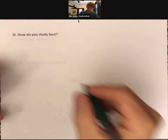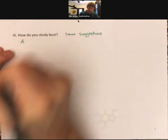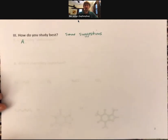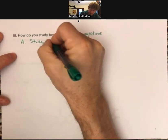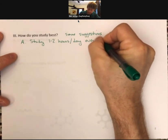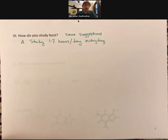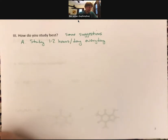How do you study best? Some suggestions. Study method A: break your study time into one to two hours per day, every day. The repetition helps. If you do two hours a day, that's 14 hours a week — close to the six hours of class time plus nine hours of study time totaling 15 hours. Everybody does things differently, but that's how I learn best.